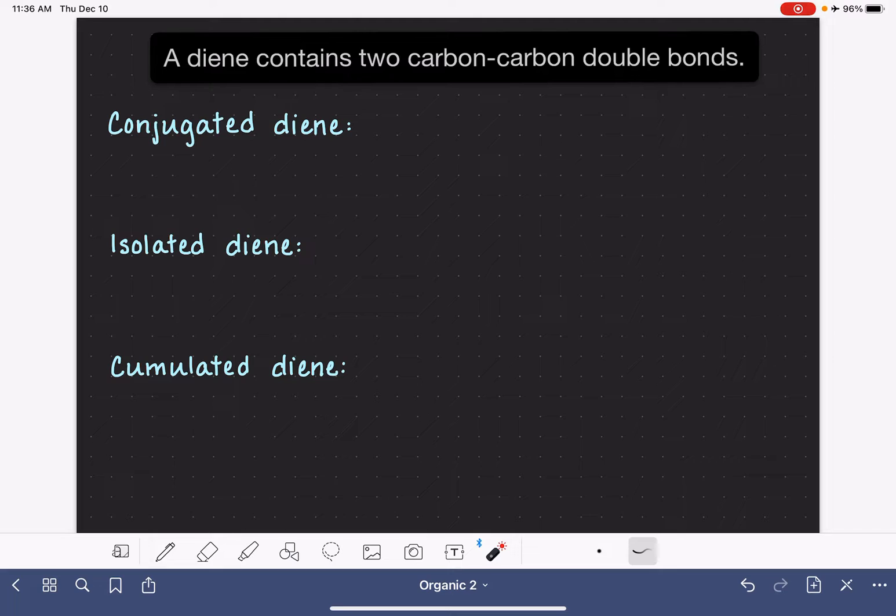There are three different types of dienes, and in this video I'm going to define each of these three types and provide you with some examples of each, starting with a conjugated diene.